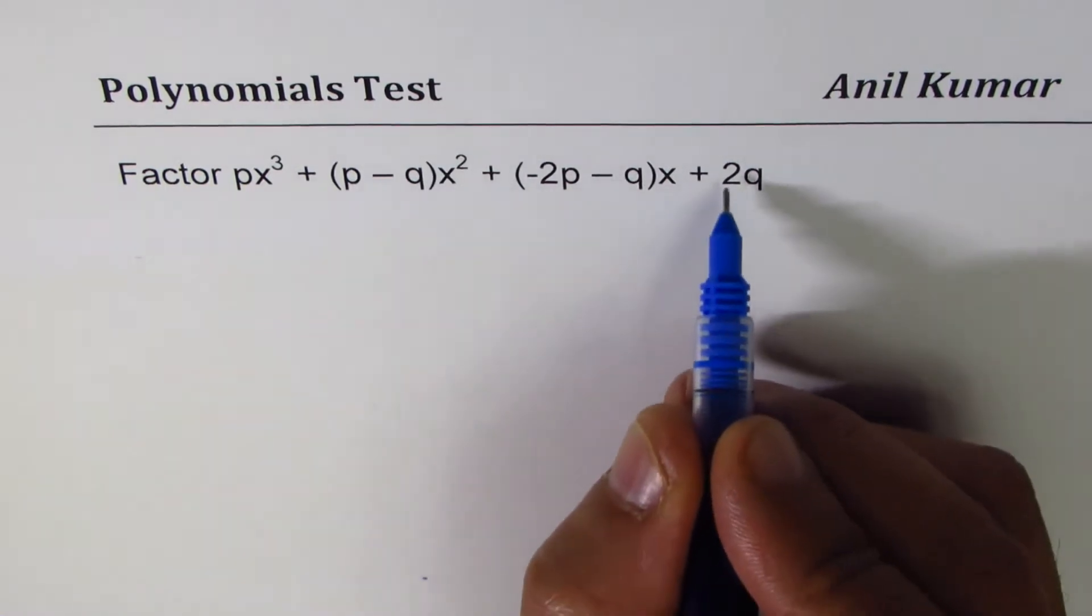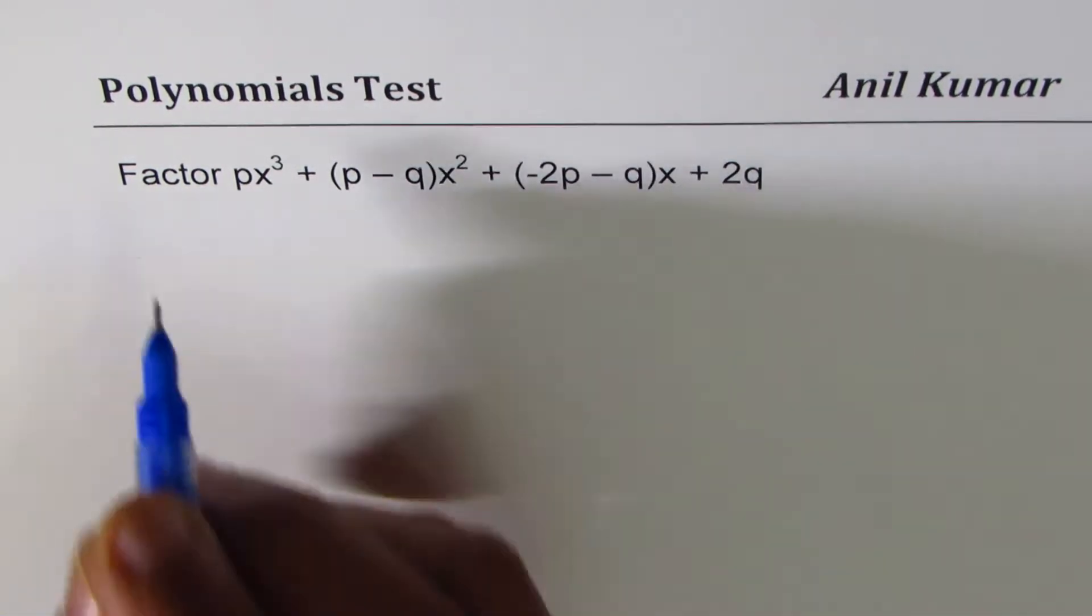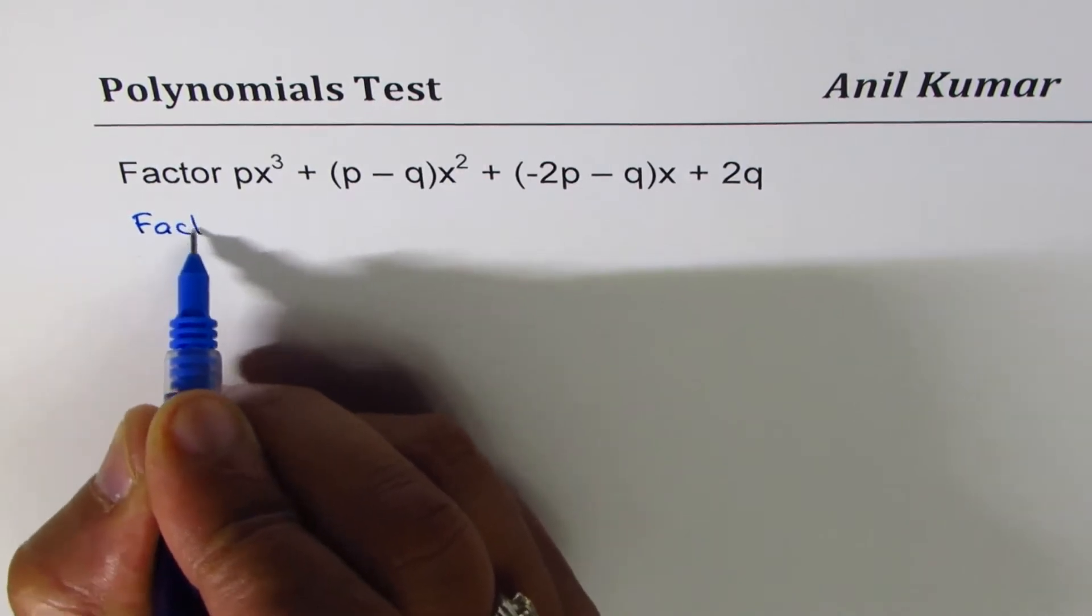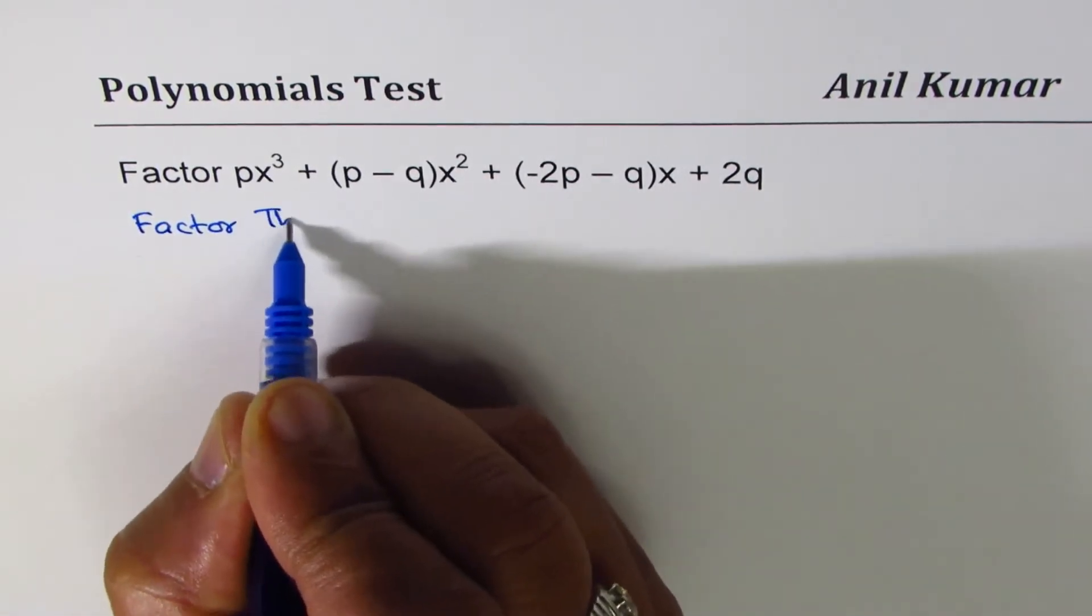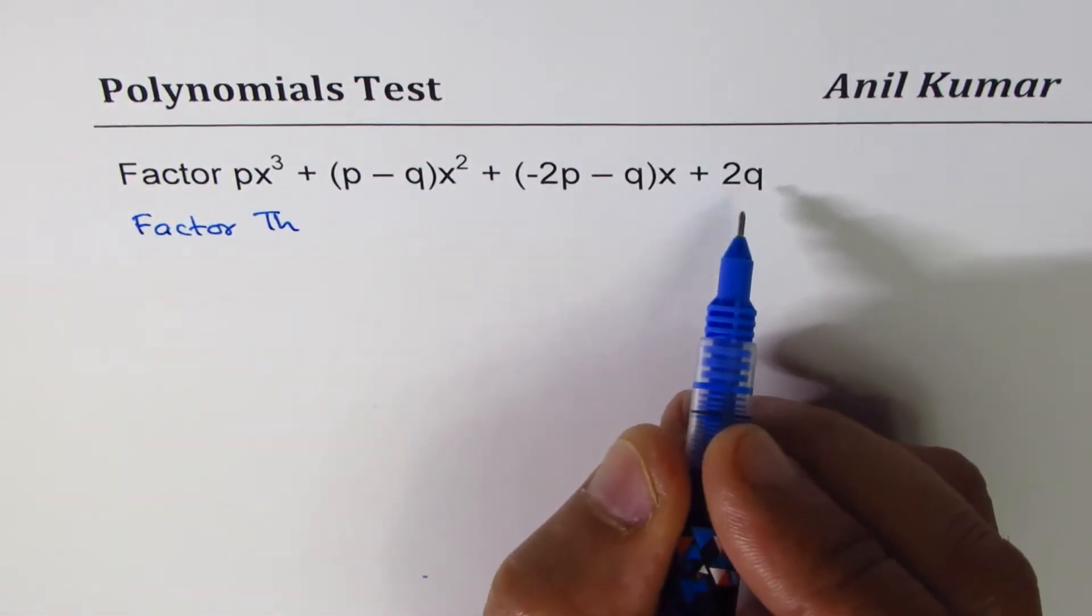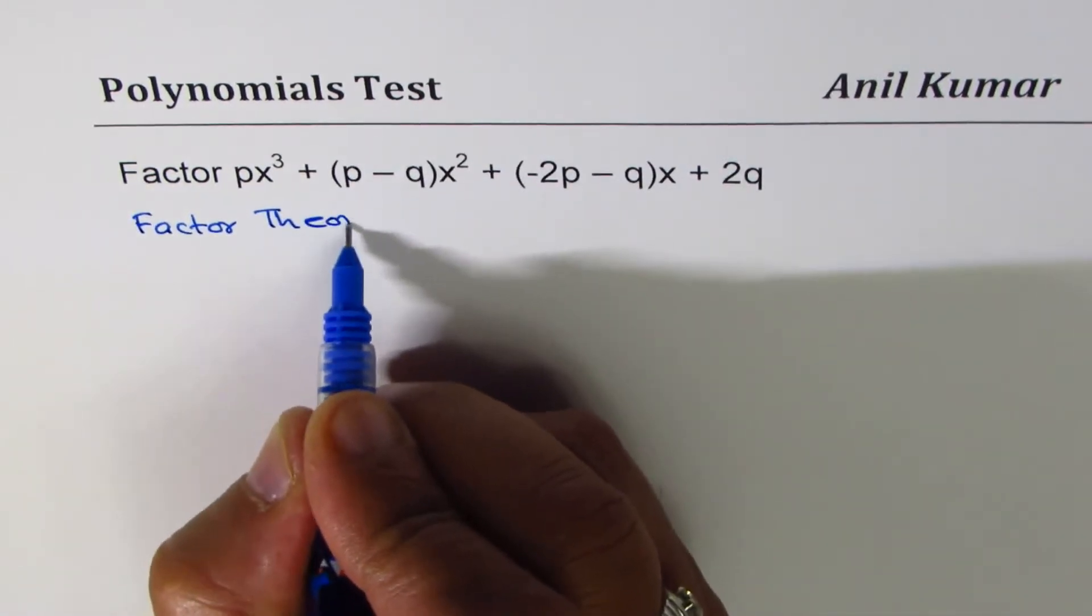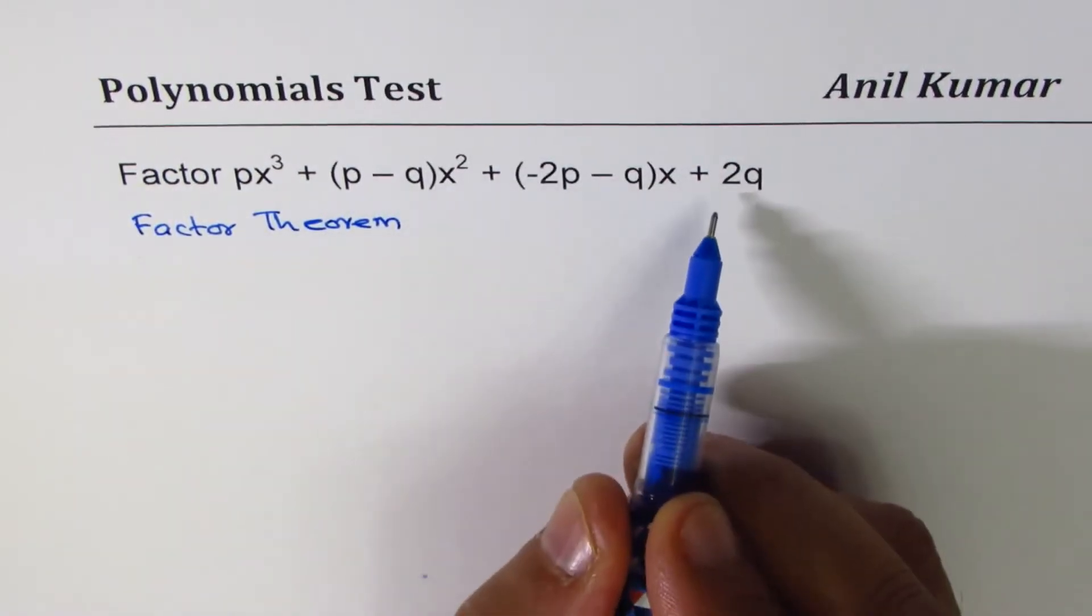So this term 2q is a constant. Now using factor theorem, we can find what are possible factors.